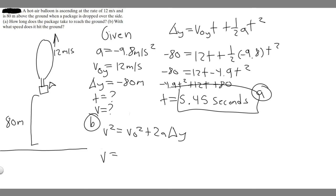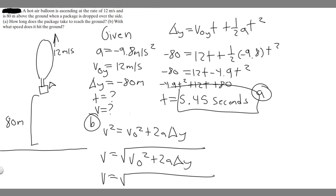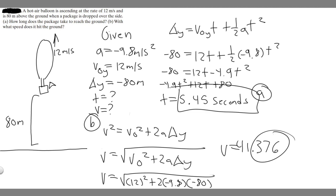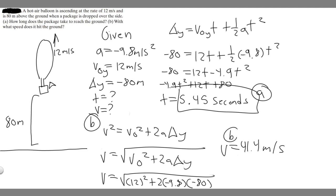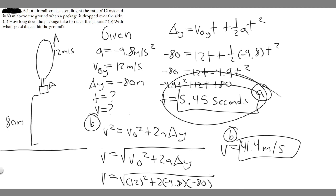To get v, we take the square root of the whole right side. So v equals the square root of v-sub-zero-squared plus 2a times delta y — that's the square root of 12-squared plus 2 times minus 9.8 times minus 80. Plugging into the calculator gives 41.376, which rounds to 41.4 meters per second. So the answer to B is 41.4 meters per second, and the answer to A is 5.45 seconds. Hopefully you found this video useful.